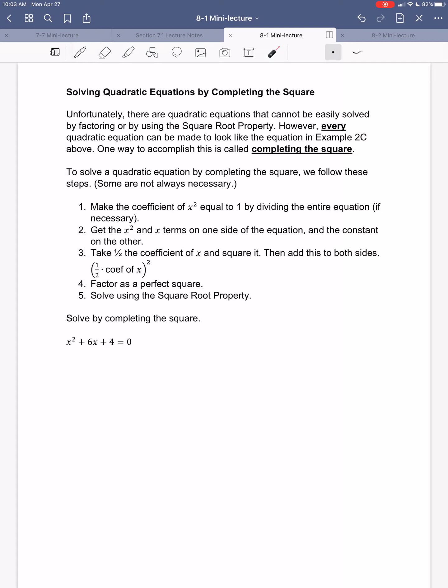So, there are some equations that can't be solved very easily using the square root property. We can make everything look like a problem where we can use the square root property, it turns out. And there's this process called completing the square. And I'm just sort of going through the process here. I'll do one example, but I'll have some other examples available in other videos.